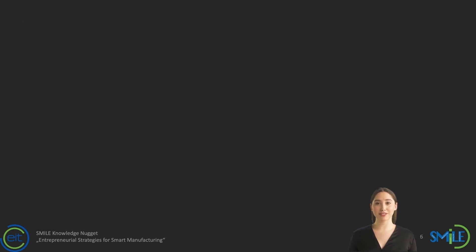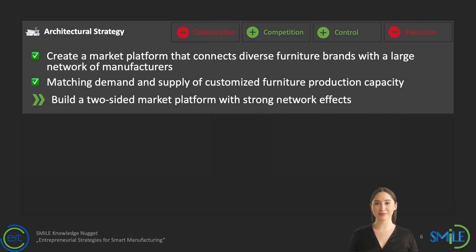A third option for Super Design would be to follow an architectural strategy, which could imply creating a two-sided market platform connecting diverse furniture brands on one side and a large network of furniture manufacturers on the other. The software would be the standardized interface to initiate matches between furniture brands searching for a manufacturer able to fulfill an order within certain quality, price, and time requirements. The likelihood of finding a perfect match rises with the number of participants on both sides, creating network effects that are hard for competitors to imitate.